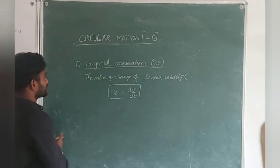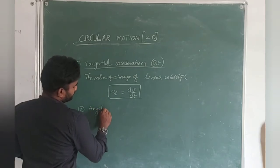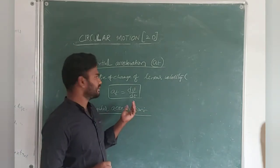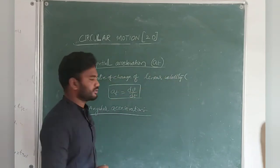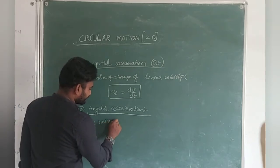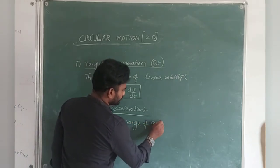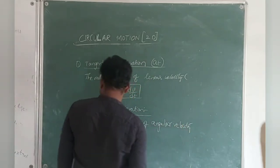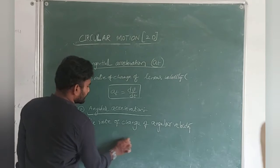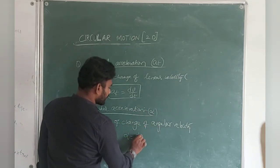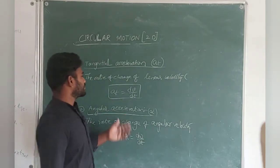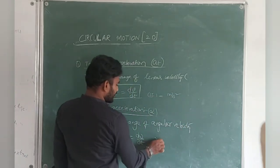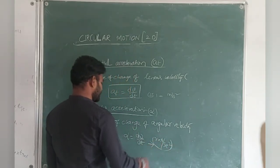The second acceleration is angular acceleration, denoted by alpha. It is the rate of change of angular velocity, and the formula is alpha = dω/dt. The SI unit of angular acceleration is radian per second square.